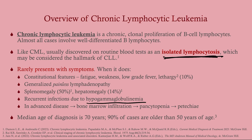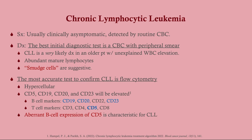In advanced disease you can get bone marrow infiltration and pancytopenia, and it can start to look more like an acute leukemia. The median age of diagnosis is 70 years — 90% of cases are older than 50 years. So this is not going to show up in a child. Generally these patients are asymptomatic, and it's detected by routine CBC.